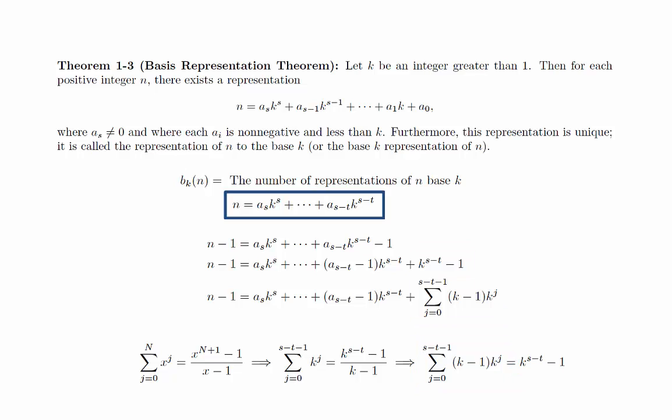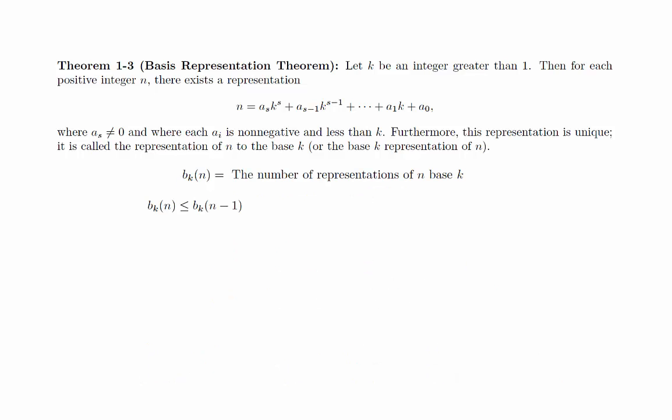This calculation shows that every representation of n leads to a representation of n minus 1, so that there are at least as many representations of n minus 1 as there are representations of n. In other words, b_k(n) is less than or equal to b_k(n-1). By noting that the calculation works for any positive integer n, we can apply this repeatedly to get a whole string of inequalities.